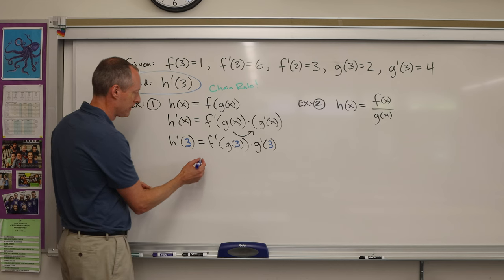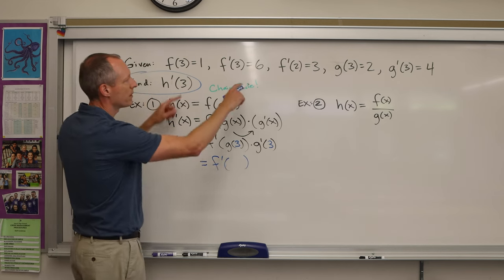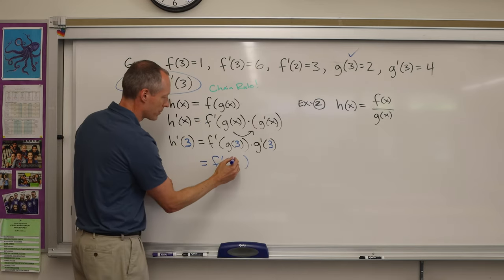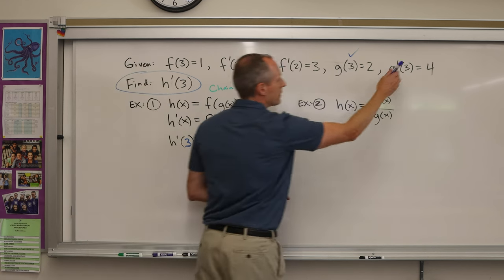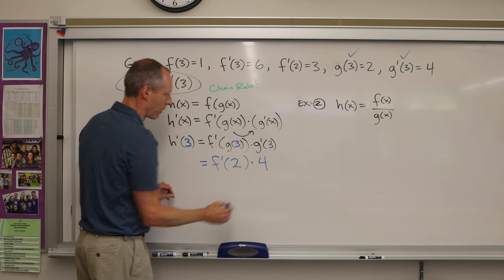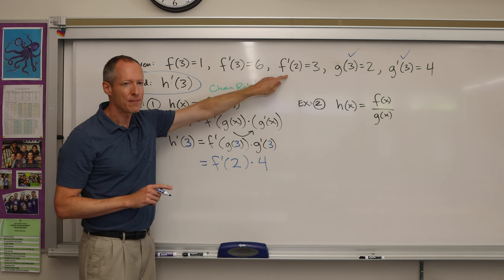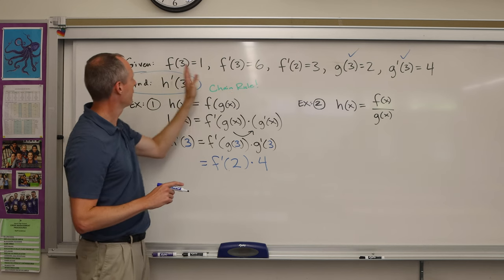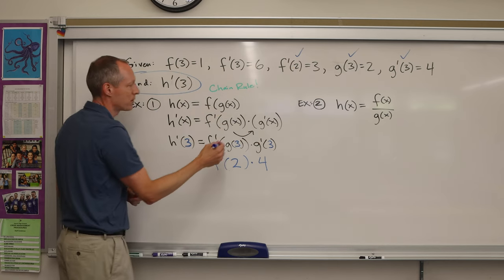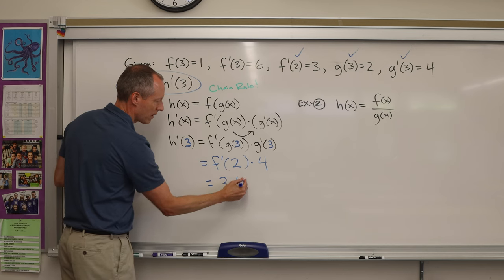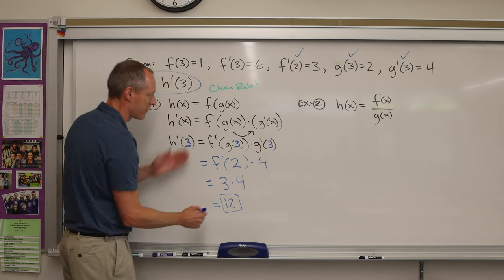After you do the formula and you plug in, it's basically arithmetic. You're going to substitute in the value. So it's f'(g(3)), so you look up here - oh okay, g(3) is 2, so you replace that with 2. And g'(3) is 4, so I replace that with a 4. Now we're not done. Now I have this f'(2), which makes sense. That may have seemed out of place, but this one had a 2 in it, that's why. So now I take this value, f'(2) = 3, and then I just multiply by 4. Simple arithmetic at that point, and the answer is 12.